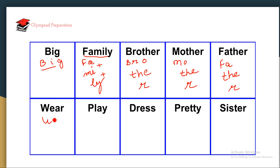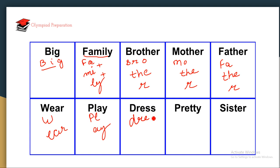Wear — the V sound from W, then EAR — wear. Play — PL + AY — play. Dress — DR + ESS — dress. Pretty — PRET + TY — pretty.